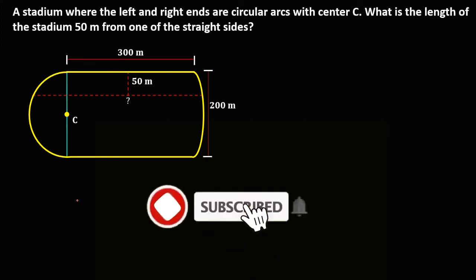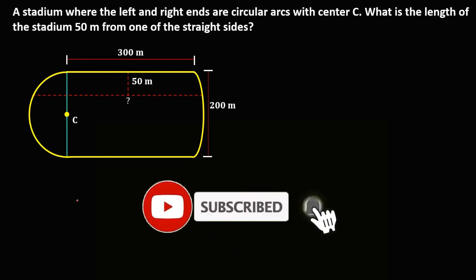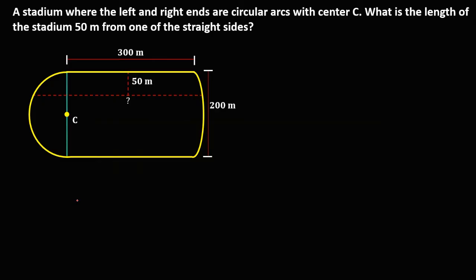Welcome to MathStoria. Let's solve this problem: a stadium where the left and right ends are circular arcs with center C. What is the length of the stadium, 50 meters from one of the straight sides? Given this figure, this horizontal length is the unknown.